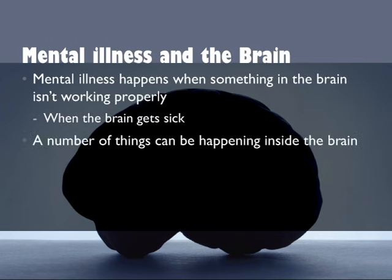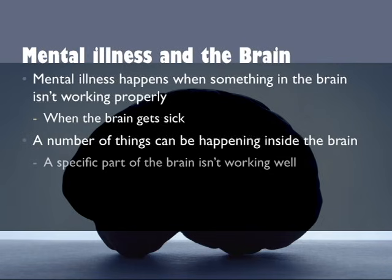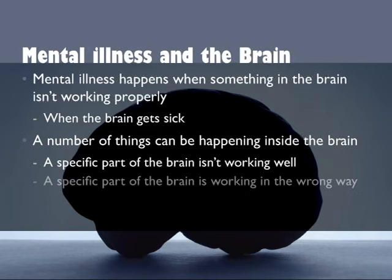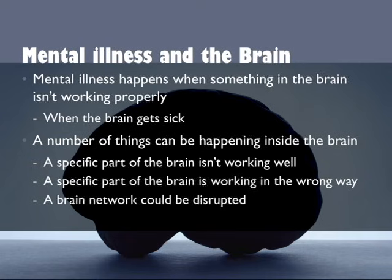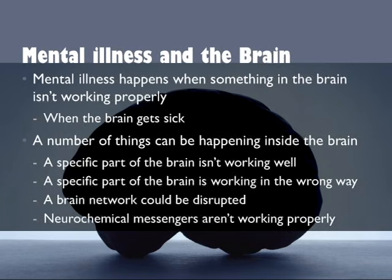A number of different things could be happening inside the brain. First, it may be that a specific part of the brain isn't working well — maybe the parts that affect storing memories. Secondly, a specific part of the brain may be working in the wrong way; for example, maybe the part in charge of signaling is overactive, so you get bursts of signaling that shouldn't be there. A third way is that a brain network could be disrupted — there may be problems in particular connections that make it difficult for them to work together properly. A fourth way could be that the neurochemical messengers that help different parts of the brain communicate aren't working properly, so the cells aren't communicating the way that they should.